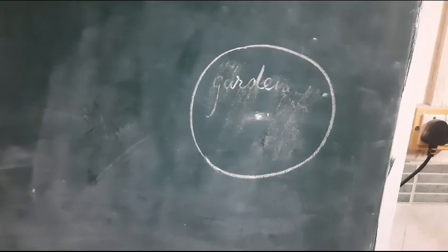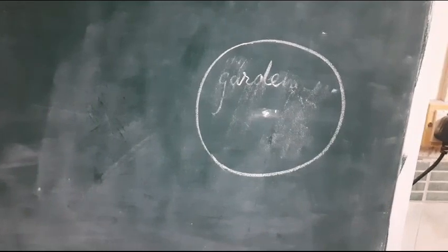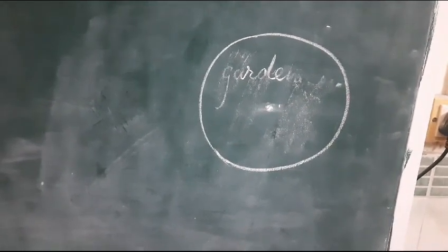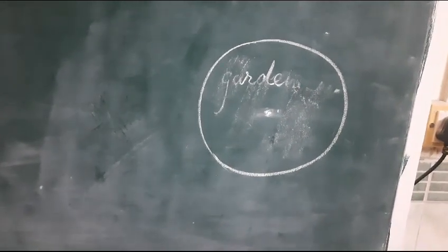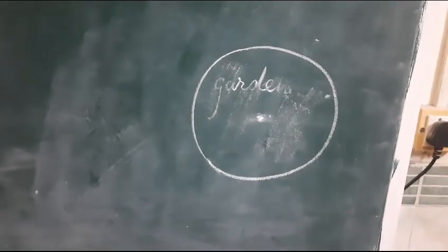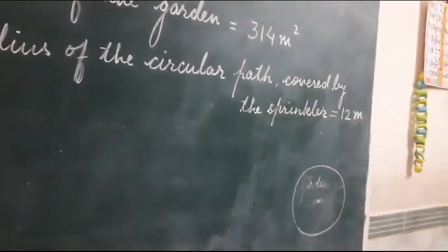the garden's area or more than the garden's area. If it will be less than the garden's area then sprinkler will not cover the entire garden. If the area will be more than the flower garden's area then that will cover the entire garden. Since we know the radius of the circular path covered by the sprinkler, we will find out the area.